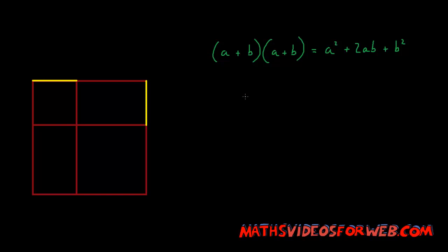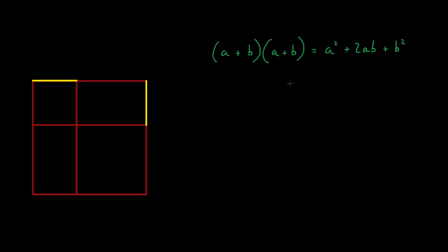Hi, in this video I'll be proving why (a + b) times (a + b) equals a squared plus 2ab plus b squared. You'll also find out why we use the FOIL method to multiply a plus b by a plus b.